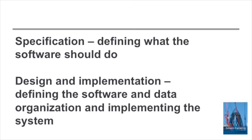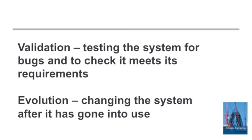Software specification is about setting out what the system should do, what should be implemented, and the expected behaviour of the software. Design and implementation is about organising the software and the data structures and implementing the system, programming it in some programming language. Software validation involves testing the system for bugs, to see if mistakes have been made in the development process and to check if it meets the user's requirements.